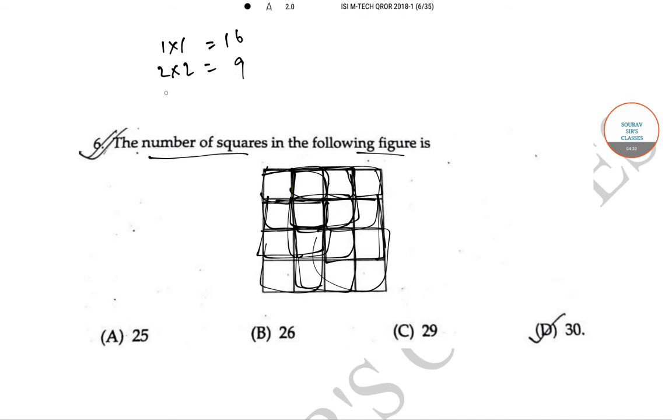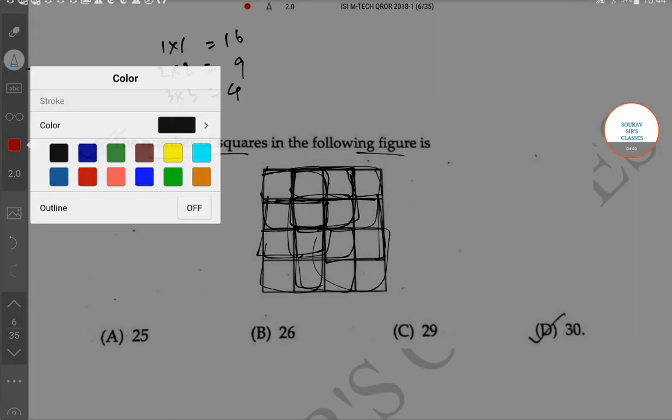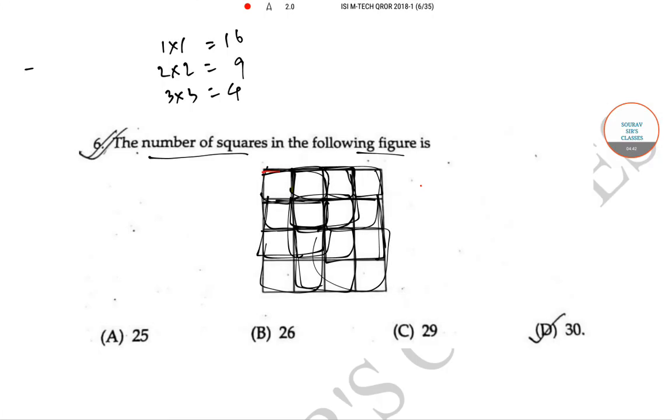Now, squares of sizes 3 x 3 will get these to be 4. Now, let me do this with another color so that you understand it. This, this one, then again, this one, along with this, this one.